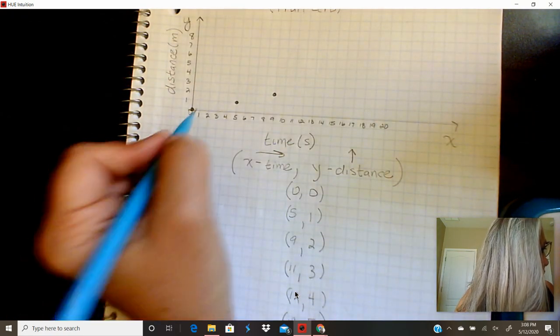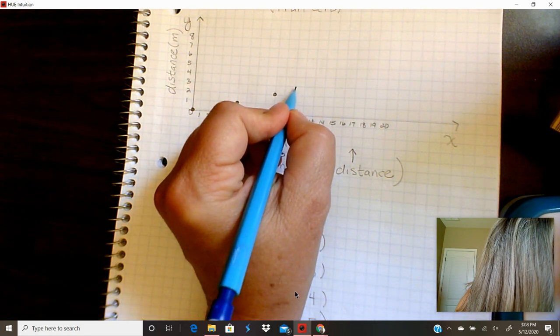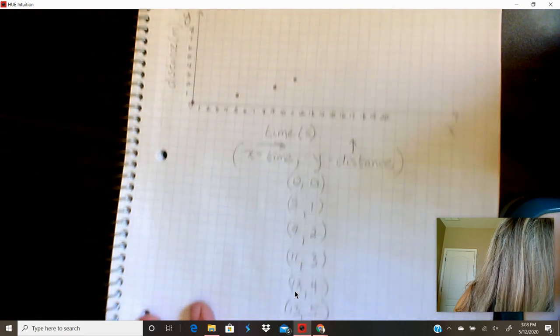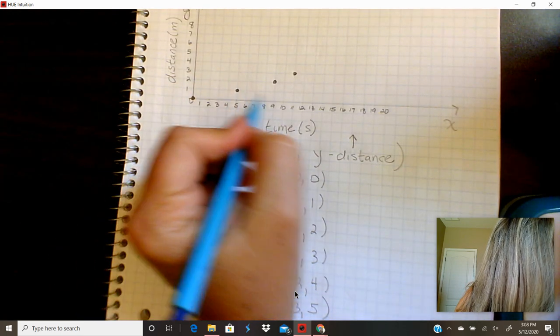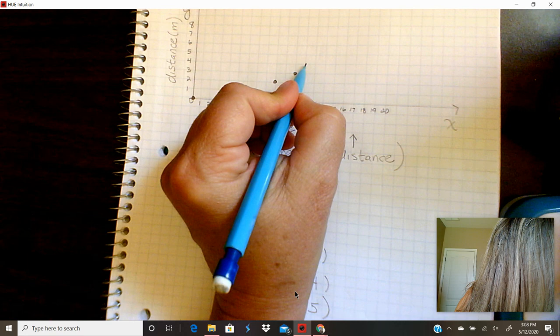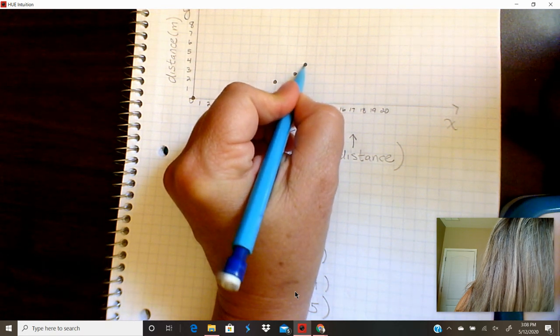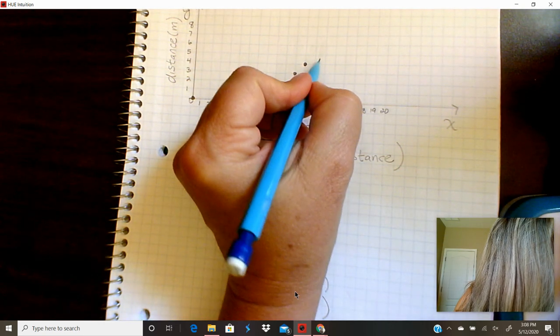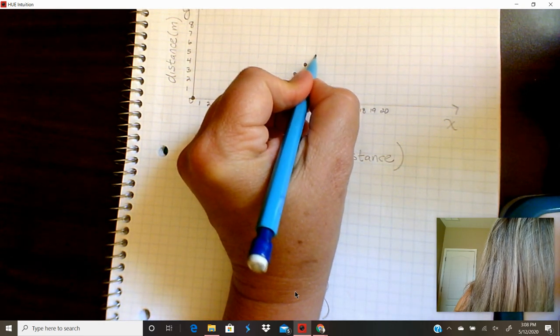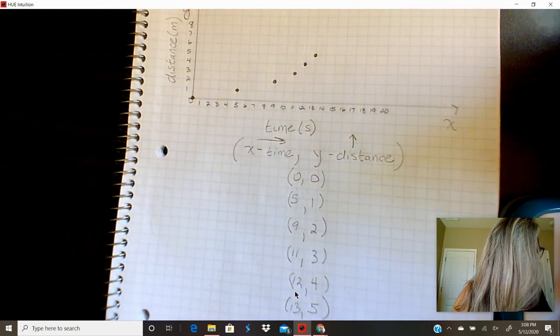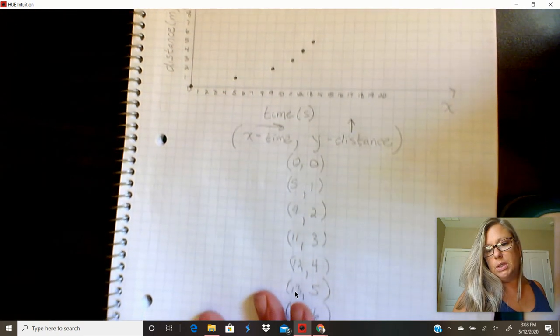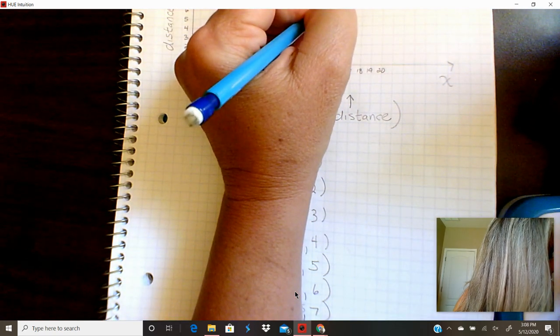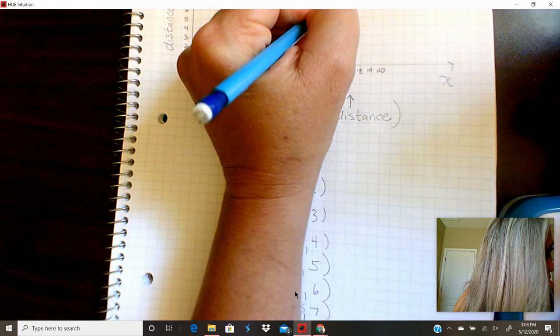Alright, the next coordinate is eleven and three. Crawl over to the eleven and climb up to the three. Alright, the next one is twelve and four. Crawl over to the twelve and climb up to the four. Alright, and then crawl over to the thirteen and climb up to the five.